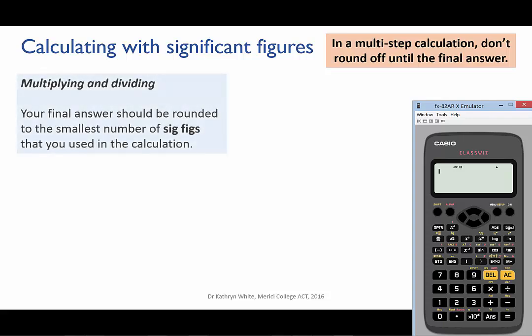So here are the rules. When you're multiplying or dividing, look for the number that you've used that has the least number of sig figs. You should then round your final answer to that number of sig figs. For instance,